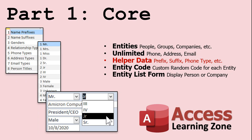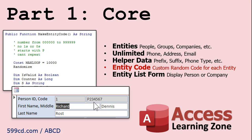We construct helper data tables to store data that doesn't need to be in a table of its own. This keeps us from filling up our database with tons of small tables for things like name prefixes, suffixes, phone number types like home, cell, work, and so on. We write a function to generate random entity codes, which we use to identify people. Each customer will have their own person number. We'll still use auto numbers for all of our table relationships, but you don't want your customers seeing those. If someone gets customer ID 6, then they know you only have five other customers.